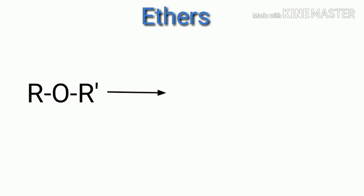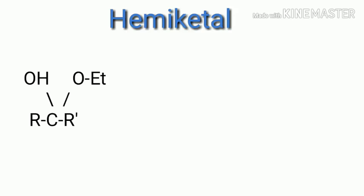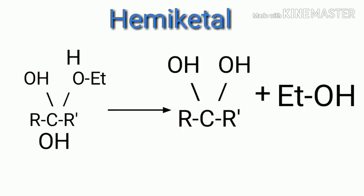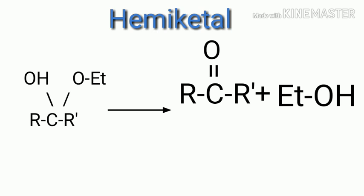Now we will get hydrolysis of ethers. ROR' in general formula — the carbon-oxygen bond breaks. We finally get ROH plus R'OH: the first product has hydrogen and the second has a carbon hydroxide. For hemiacetals, the carbon-oxygen bond breaks and oxygen gets H⁺. Carbon hydroxide is unstable so H₂O is lost, finally giving R-C=O-R', which is a ketone.